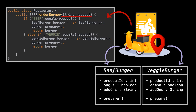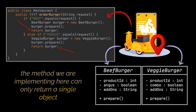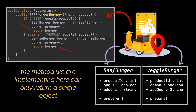After receiving our client request, our application will identify the food it needs to prepare and based on this information, it will proceed by creating the object corresponding to this type of burger, prepare it and then return it to the user. However, there's a slight limitation here, as the beef burger and veggie burger objects we are creating represent different types of products and the method we are implementing here can only return a single type, a single object.